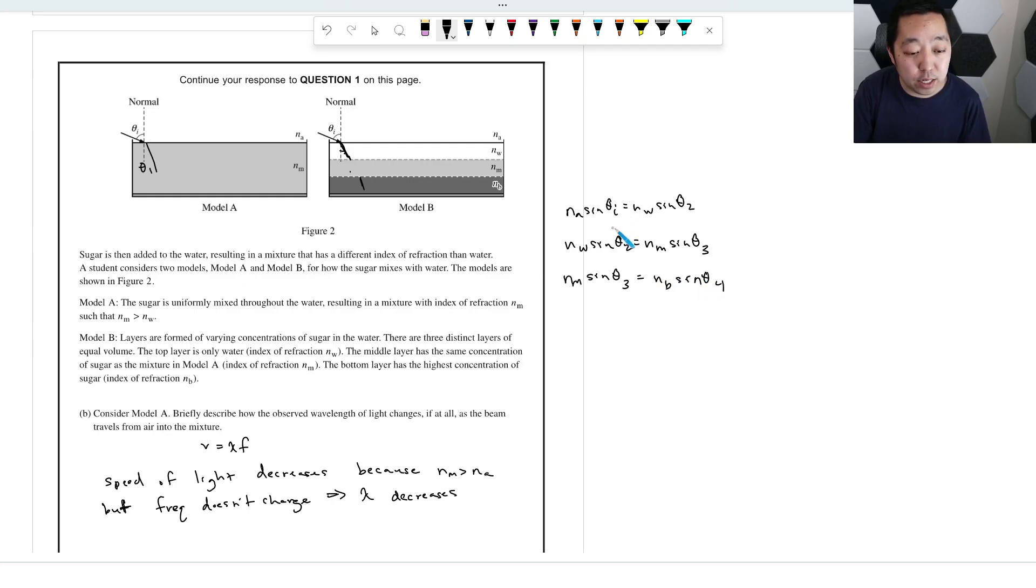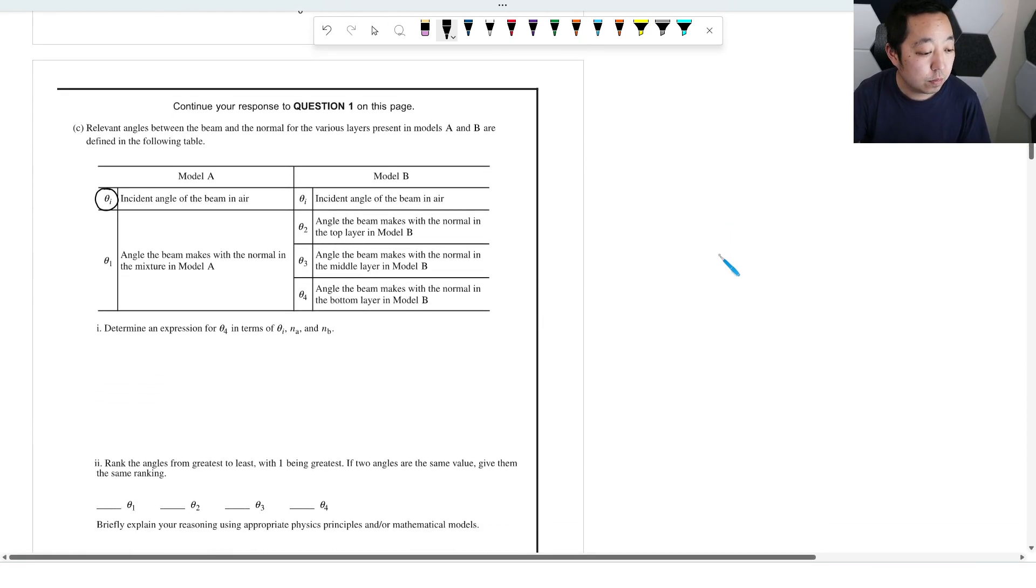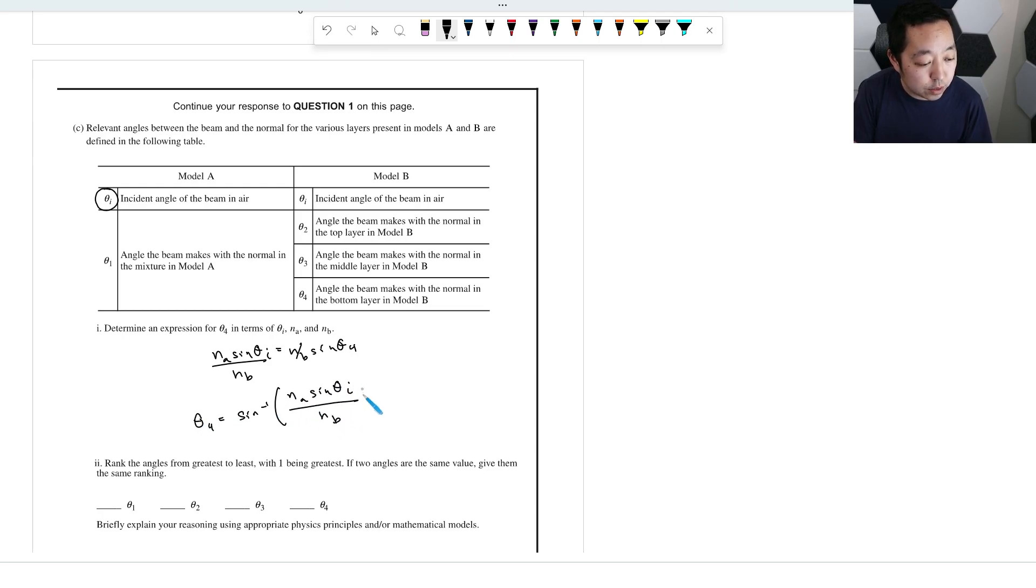So you can divide the NB over here and then do inverse sine. Theta 4 is going to be inverse sine of NA sine of theta I over NB. That's Snell's law there.